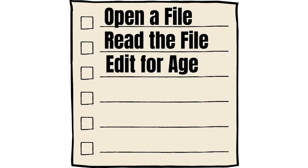Pseudocode is not quite code — it's kind of like English. For example: 'I'm going to open a file. I'm going to read the file. I'm going to edit for their age.' You write that out, everybody can see it, maybe you're missing something. They can see that, and once they agree on your pseudocode or your UML diagram, then you can actually start writing code.